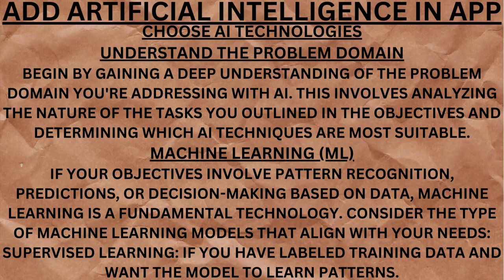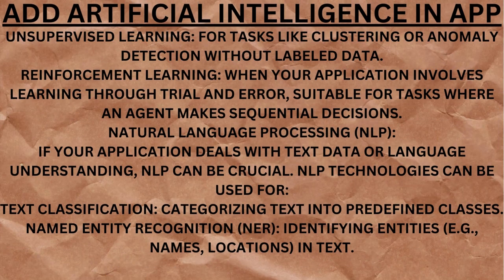Consider the type of machine learning model that aligns with your needs. Supervised learning: if you have labelled training data and want the model to learn patterns. Unsupervised learning: for tasks like clustering or anomaly detection without labelled data. Reinforcement learning: when your application involves learning through trial and error, suitable for tasks where an agent makes sequential decisions.